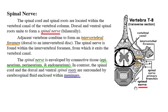Each spinal nerve is formed bilaterally by the union of dorsal and ventral spinal roots that attach to the spinal cord. A spinal nerve is located more or less within an intervertebral foramen formed by adjacent vertebrae. Spinal nerves and their branches are enveloped by connective tissue called epineurium, perineurium, and endoneurium. In contrast, the spinal roots are enveloped by meninges that enclose the spinal cord as well as the spinal roots.